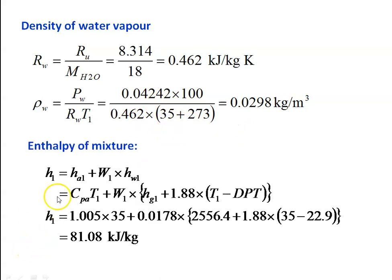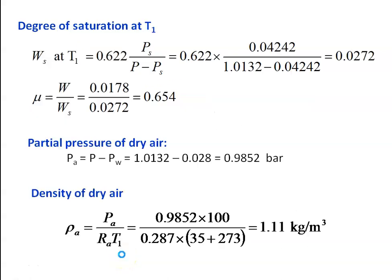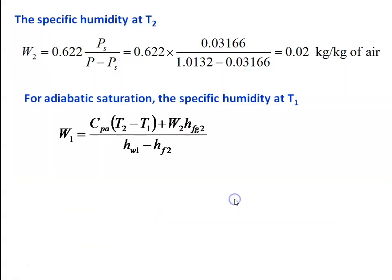Enthalpy of the mixture: H1 = HA1 + W1 × HW1, where HA1 = CPA × T1 and HW1 = HG1 + 1.88 × (T1 − dew point temperature). Substituting: 1.005 × 35 + 0.0178 × (2556.4 + 1.88 × (35 − 22.9)) = 81.08 kJ/kg. We have now calculated all parameters: partial pressure of water vapor, specific humidity, dew point temperature, relative humidity, degree of saturation, density of air, density of water vapor, and enthalpy of the mixture.